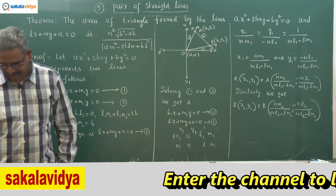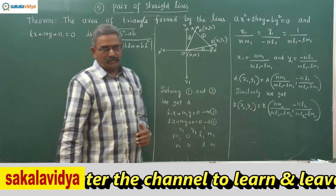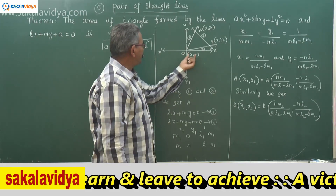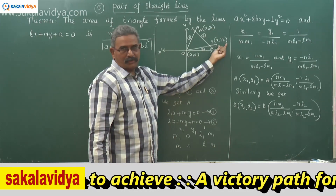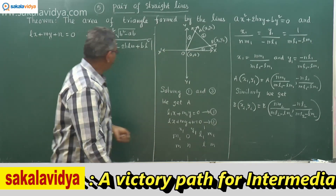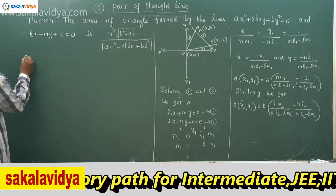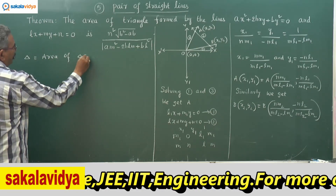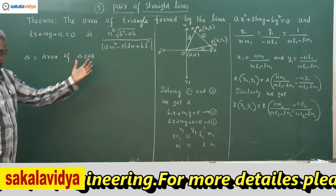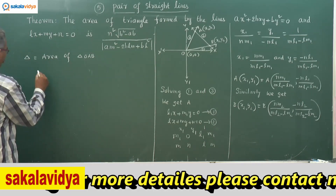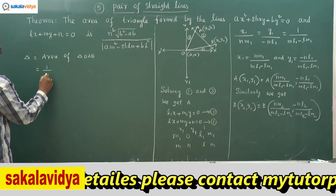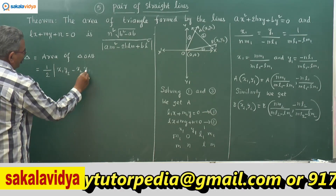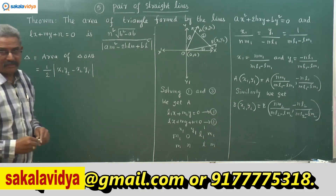Now we find the area of the triangle with vertices O(0, 0), A(x₁, y₁), and B(x₂, y₂). Area of triangle OAB = ½|x₁y₂ - x₂y₁|. Substituting: x₁y₂ = nm₁/(ml₁ - lm₁) × (-nl₂)/(ml₂ - lm₂), and x₂y₁ = nm₂/(ml₂ - lm₂) × (-nl₁)/(ml₁ - lm₁).